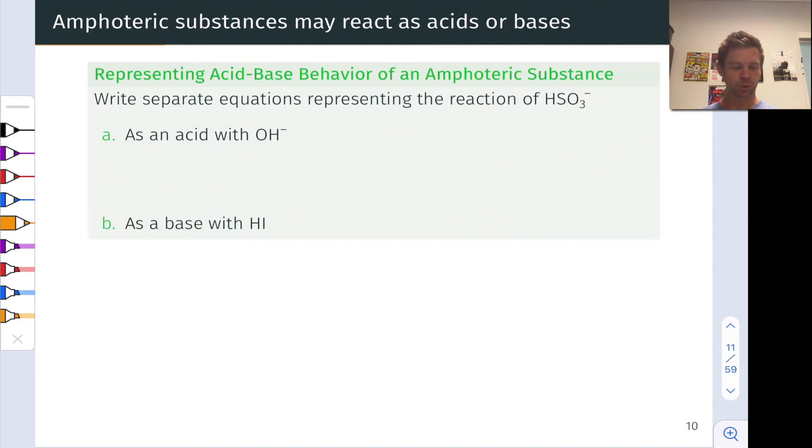In this problem, we're testing our understanding of amphoteric substances by thinking about HSO3-, the bisulfite ion. We can think about bisulfite reacting with OH- as an acid. So HSO3- reacting with OH-. We can also think of HSO3- reacting as a base. There, HSO3- is reacting with the strong acid HI.